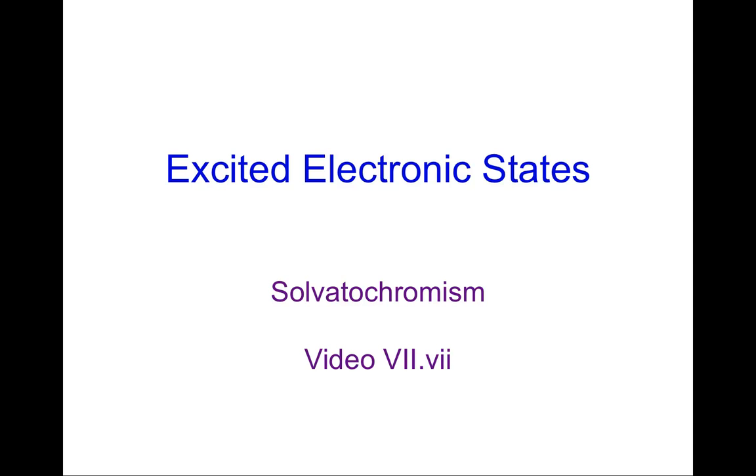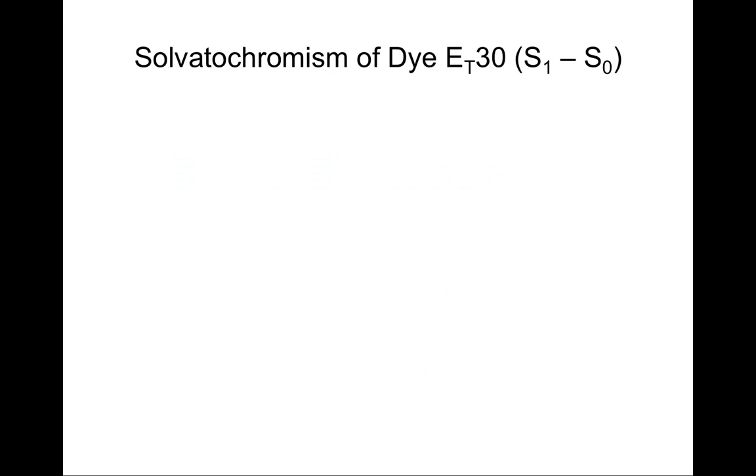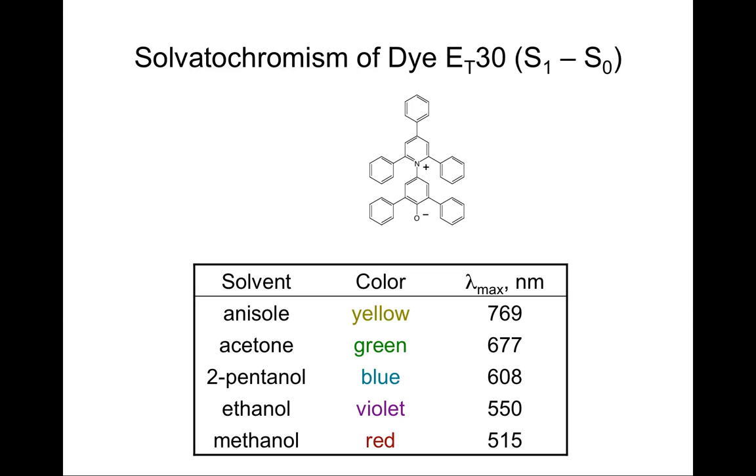The last area I'd like to discuss in the context of excited electronic states is solvatochromism. I've shown this slide before when talking about how important solvation effects can be. You recall that the betaine dye, called ET30, when dissolved in different solvents has different colors. The solvents take on a different color, reflecting that the dye is absorbing photons of different frequencies as it goes from its S0 ground state to its S1 first excited state.